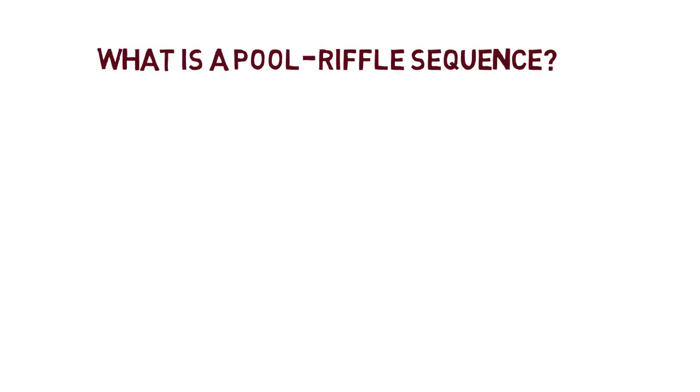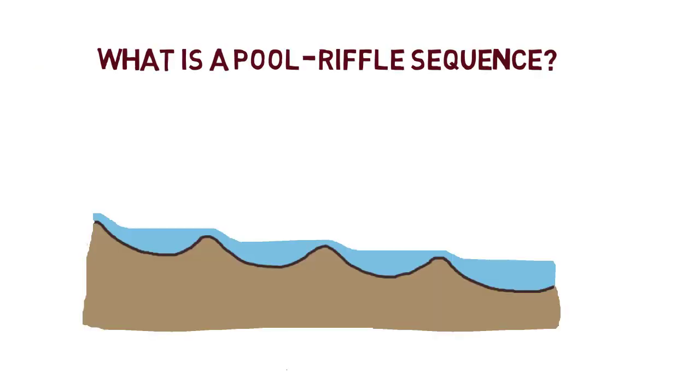A pool-riffle sequence is a pattern of alternating shallow and deeper sections of a stream. The high points are called riffles and the deeper areas are pools.